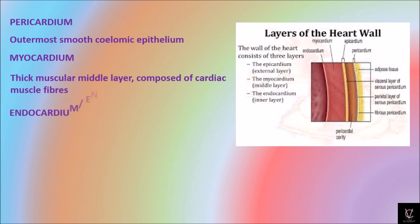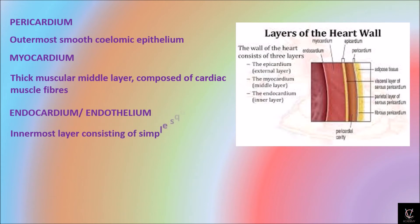The endocardium is the innermost layer, consisting of simple squamous epithelium cells. To summarize: pericardium is the outer layer made of smooth squamous epithelium; myocardium is the thick middle layer composed of cardiac muscle fibers; and endocardium is the innermost layer of simple squamous epithelial cells.